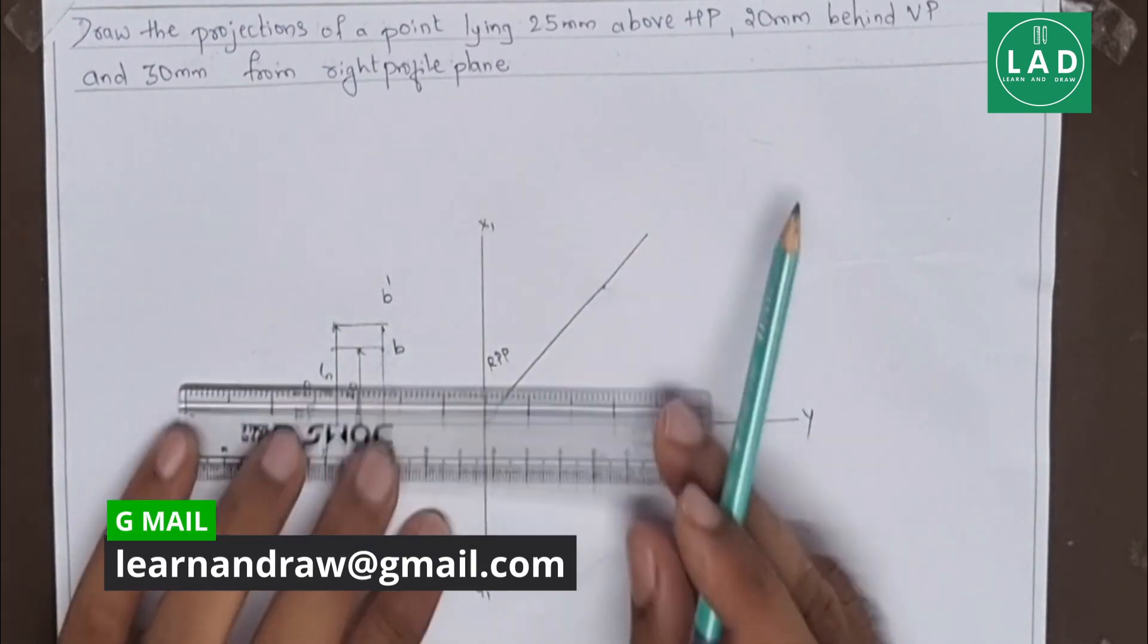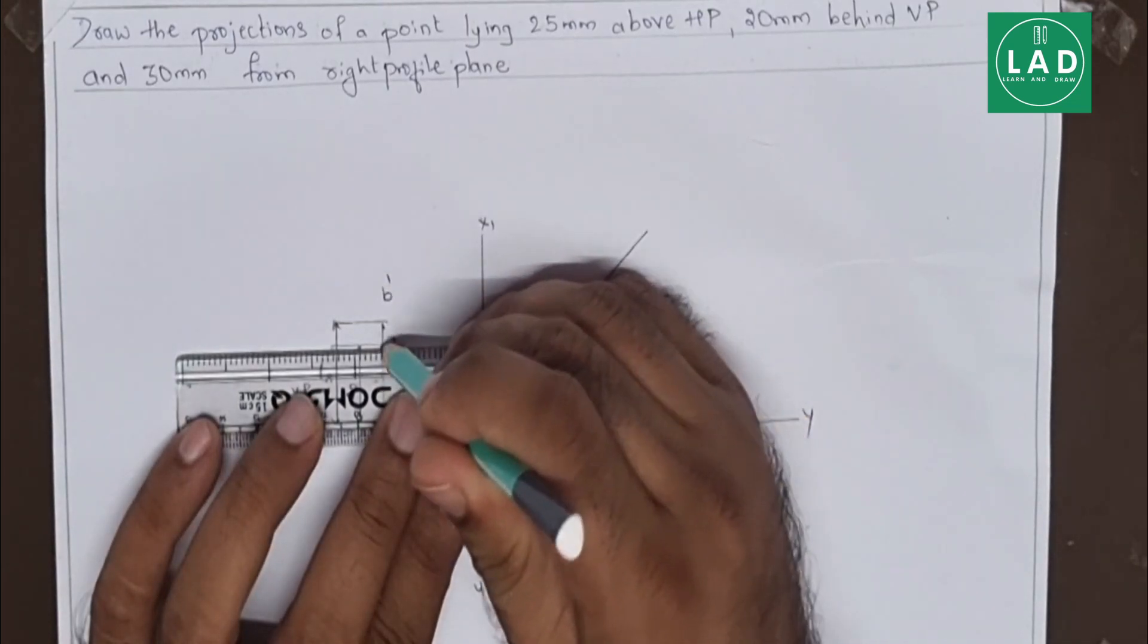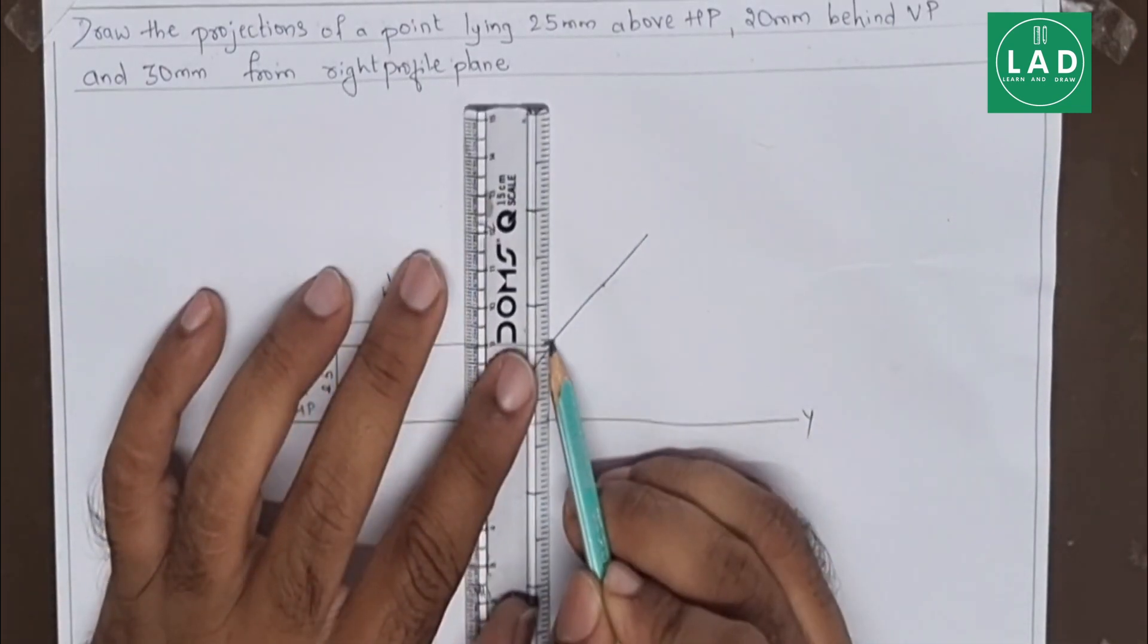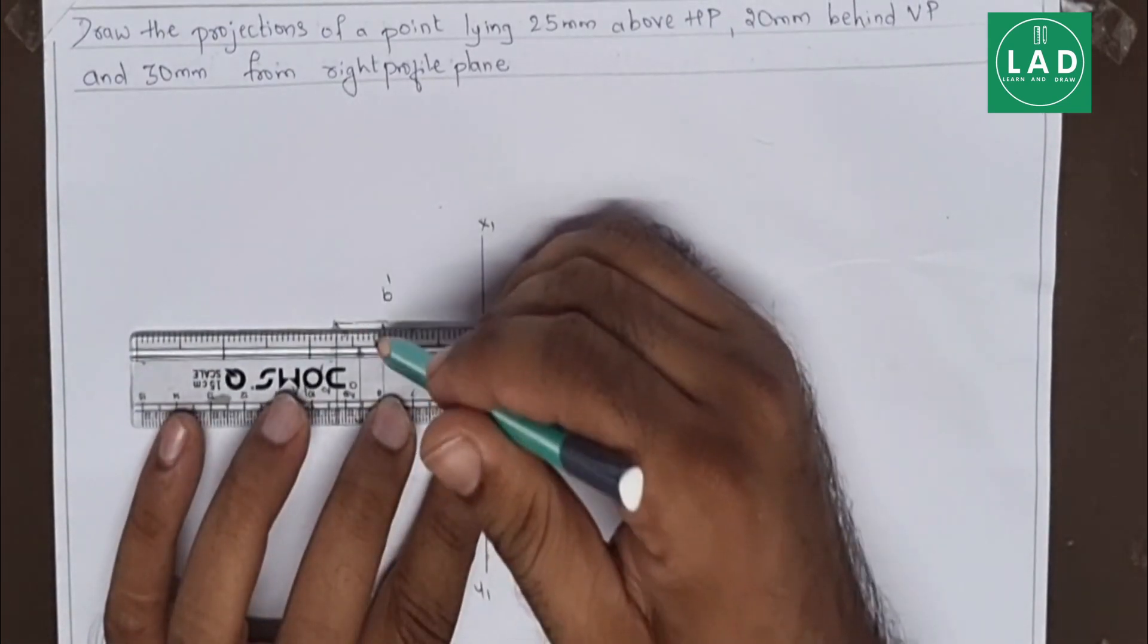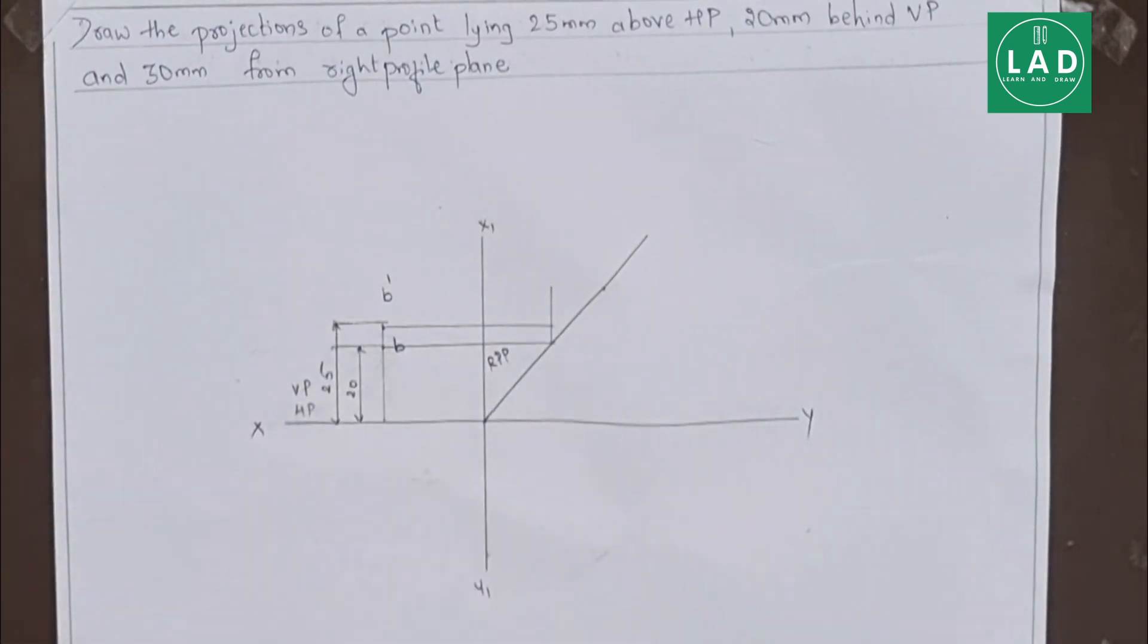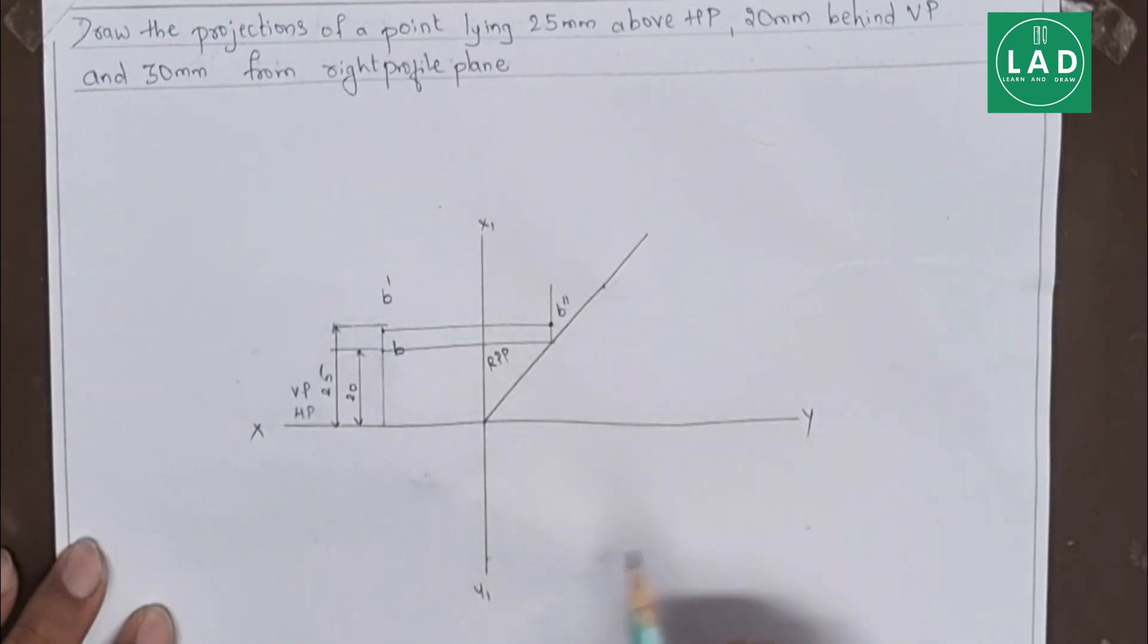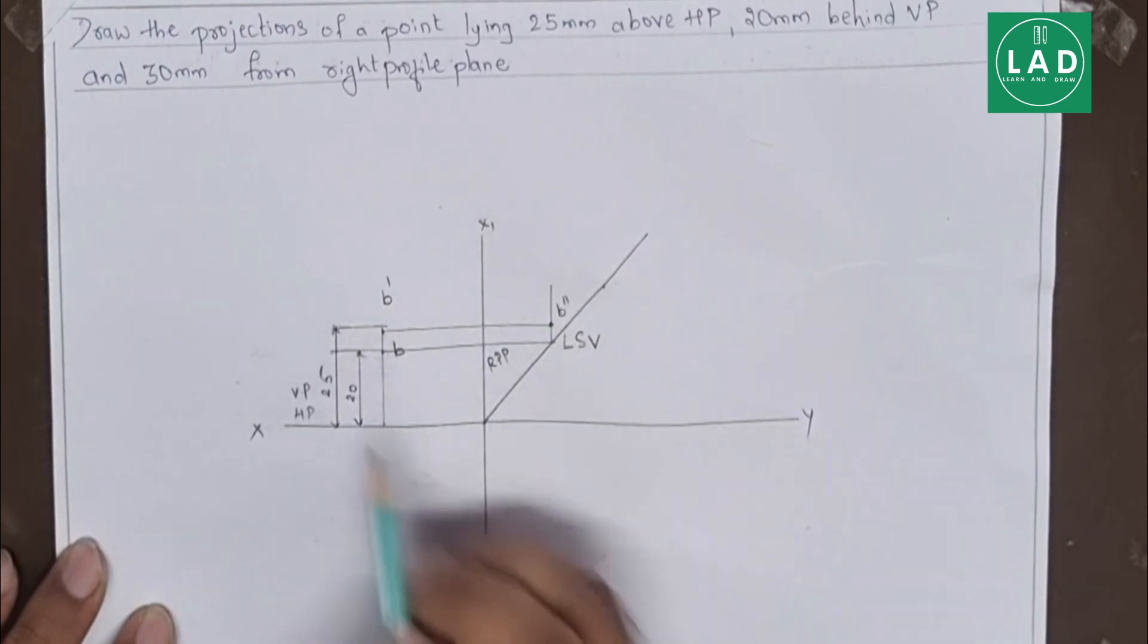The last point is let's draw a line from the top view which touches this 45 degree line then project it upwards like this. Similarly, from the front view, let's draw a line which will meet the same point. Now this point will name this as B double dash. This is our side view that is left side view.